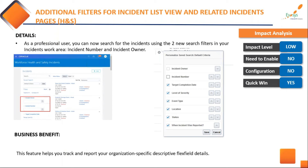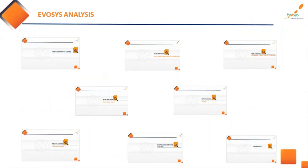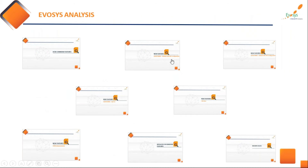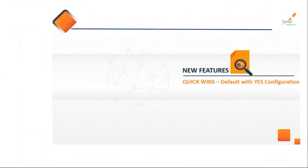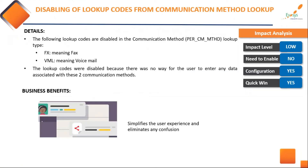There are also filters for incident lists in health and safety. That brings us to the end of quick wins which are default with no configuration. Moving on to quick wins with minor configurations — lookup codes for communication method: fax (FX) and VML are now removed from communication method, as they weren't enabled to capture more information. Removing them simplifies the user experience and eliminates confusion.